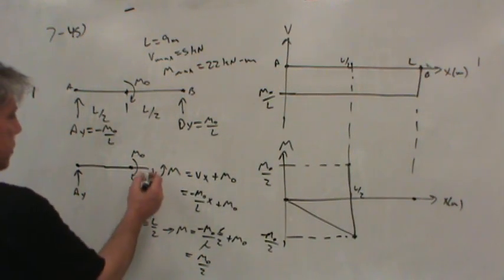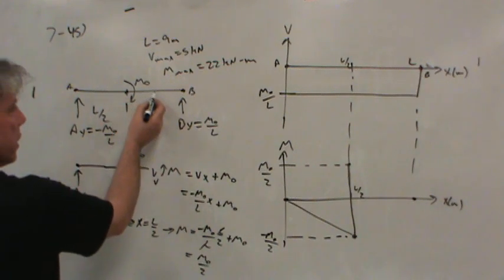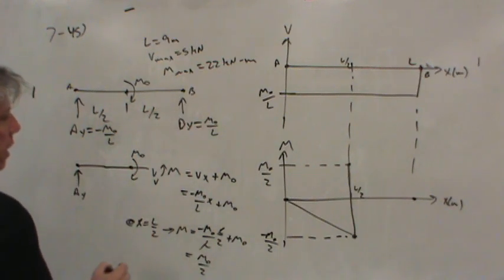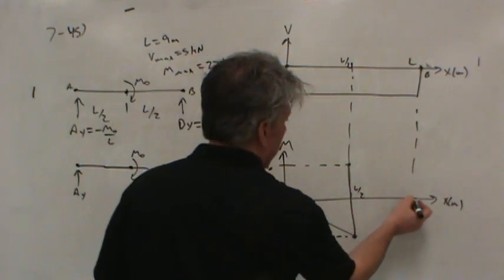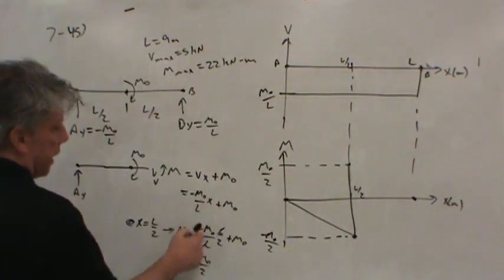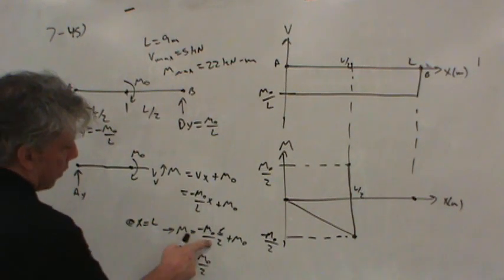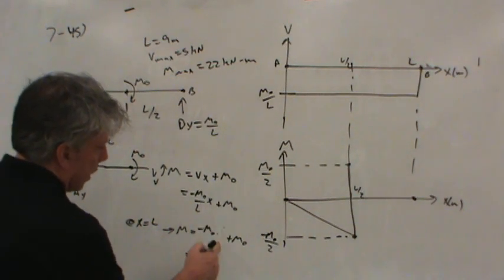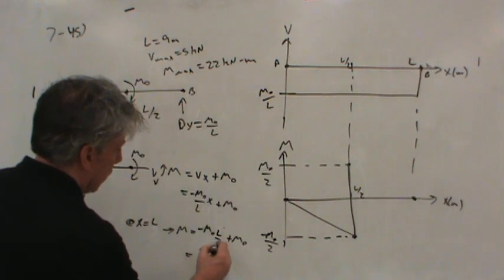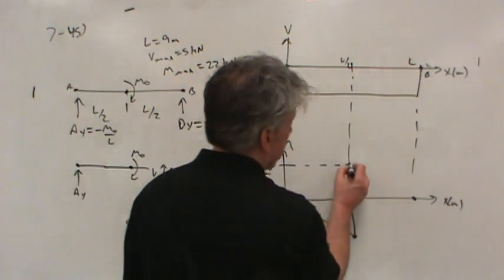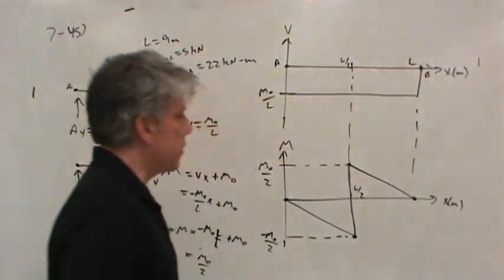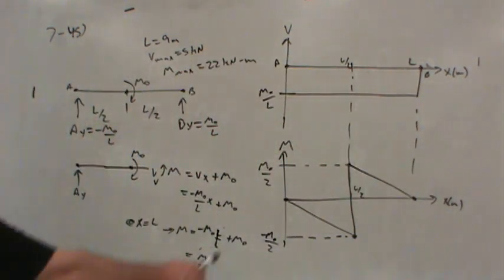Now, as we move the X position along, as we consider the cut moving closer and closer to B, all that happens is X gets larger and larger, and in fact, X becomes L eventually. And at X equal to L, what happens is we get L over L, which is 1, and we get M-naught minus M-naught, so we get 0. So sure enough, the moment goes to 0 at the end of the beam. So there's the shear and moment diagram for this particular beam, but that's not really the question.